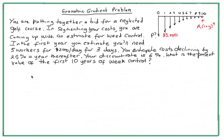In the first year you estimate you'll need five workers for $200 a day for three days. So A1 is five multiplied by three days multiplied by $200 a day, which gives us A1 equals $3,000. That's what you're going to have to pay the first year that you have the golf course.